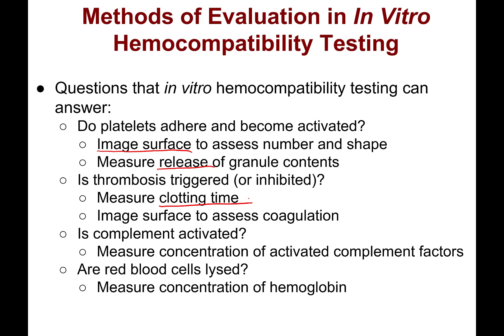For thrombosis, we can measure the clotting time using, for example, the partial thromboplastin time assay — similar to what was shown previously when looking at coagulation activated via the intrinsic pathway. We can look for coagulation using imaging-based assessment. We can also ask: is complement activated? We look for complement factors to see if any are being produced. And finally: are red blood cells being lysed? In this case, we're looking for hemoglobin that would be released.